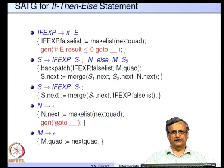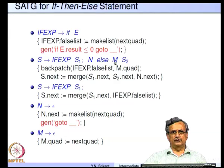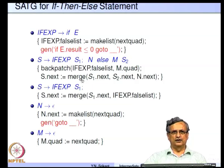For example, after the then-part S1 is executed we are required to jump out of the if-then-else to the end of the statement. To do that, the marker N is used: when the reduction N to epsilon happens, a goto statement with an unknown label target is generated. This goto statement is put on N dot next, which is a list. At this point N dot next will contain the goto quadruple with its target unfilled.